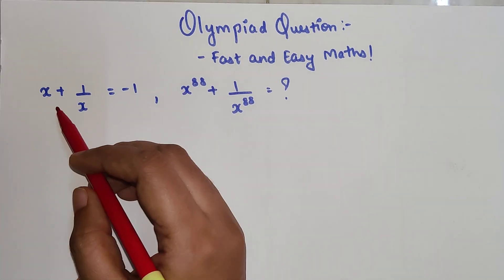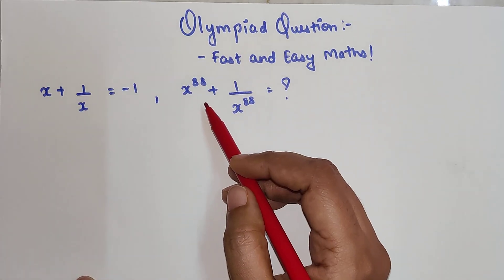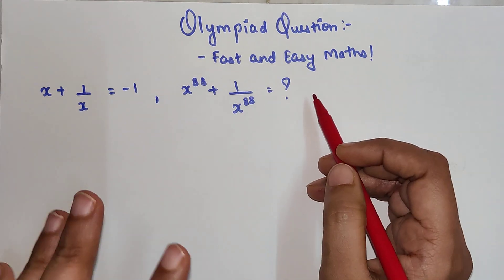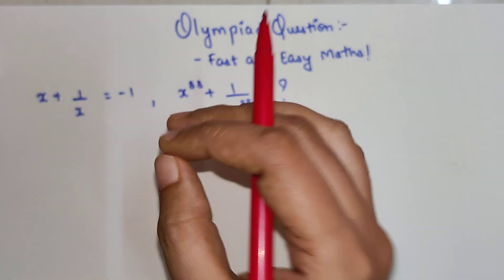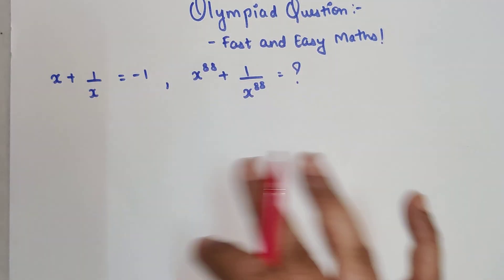The question is: if x + 1/x = -1, then what is the value of x^88 + 1/x^88? I will tell you there is one point in the solution - if you can figure that point out, the entire question can be extremely easy.